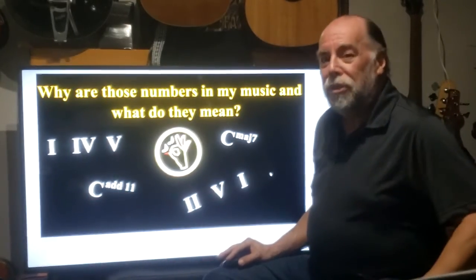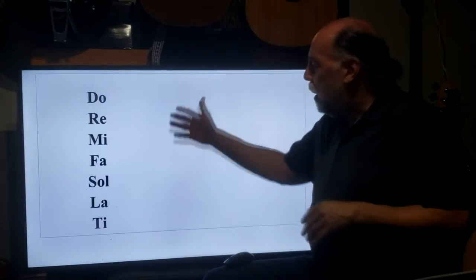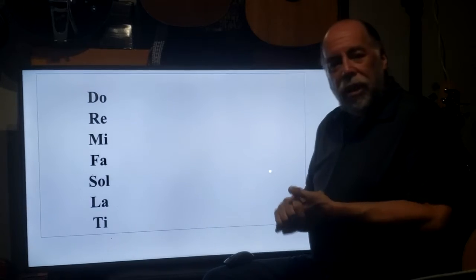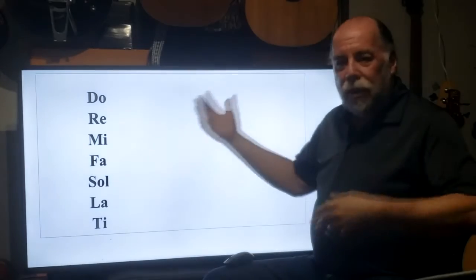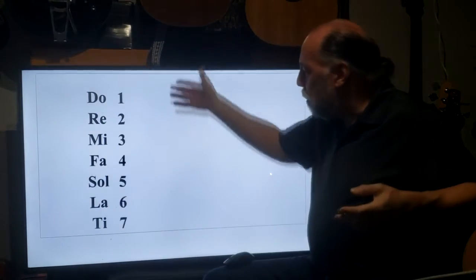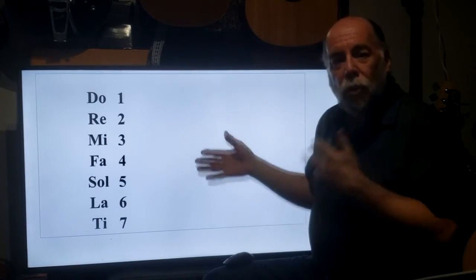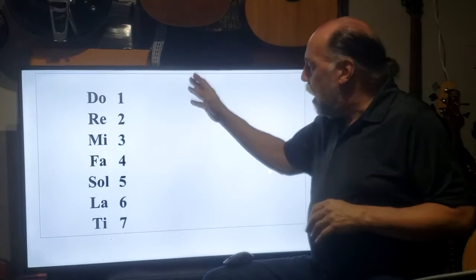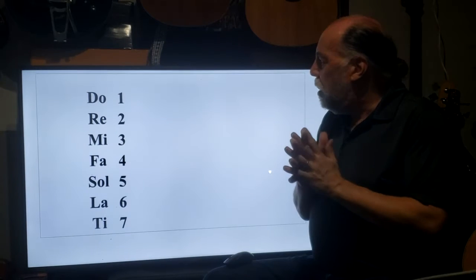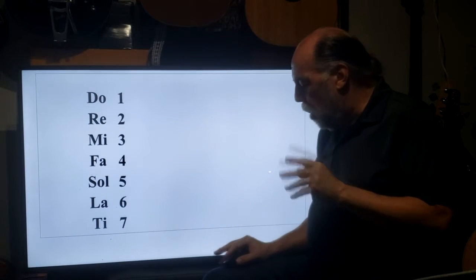The answer is as easy as do, re, mi. That's right — do, re, mi, fa, sol, la, ti — just repeats and repeats and repeats. We're talking about the diatonic scale. So when they talk about the numbers, they're talking about the positions of the diatonic scale.